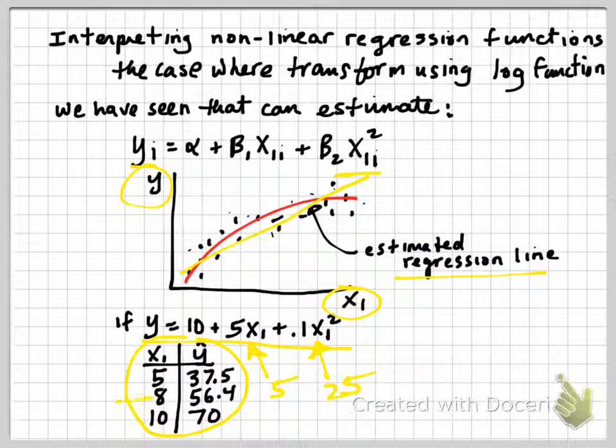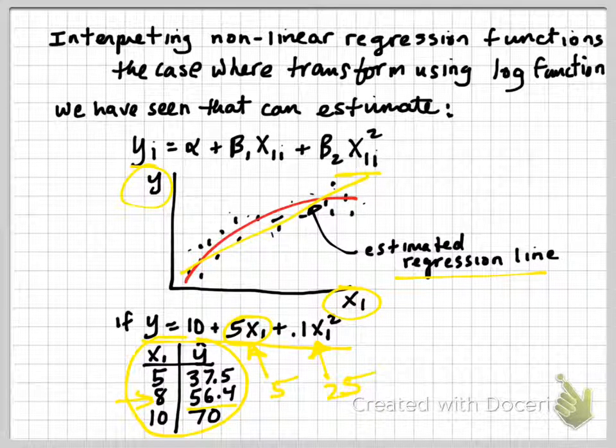And if x1 is 8, then we plug 8 in there. We have 5 times 8 is 40, plus 10 is 50. The square of 8 is 64, so that would be, when multiplied by 0.1, would be 6.4. So we have y is equal to 56.4.